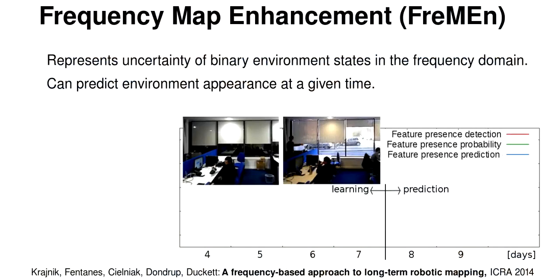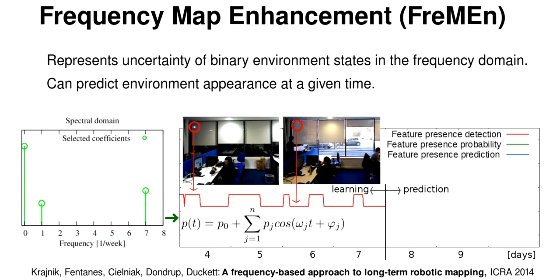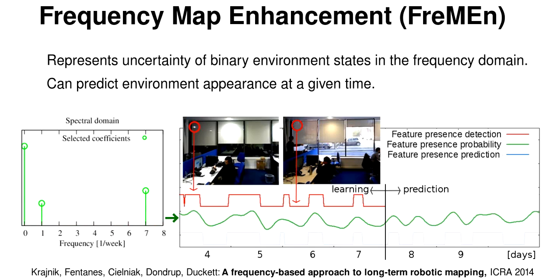Assume that we have observed the visibility of a particular image feature for several days. We model the observation as a binary function of time and calculate its frequency spectrum. We identify the most prominent spectral components and discard the non-essential ones. Transforming the spectrum back to the time domain gives us a probability function of time, which allows us to predict when the feature will be visible and when it will not.